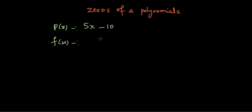Let's say another polynomial f(x) is x² minus 9x. And what we are interested in are the zeros of these polynomials. So what are zeros really?